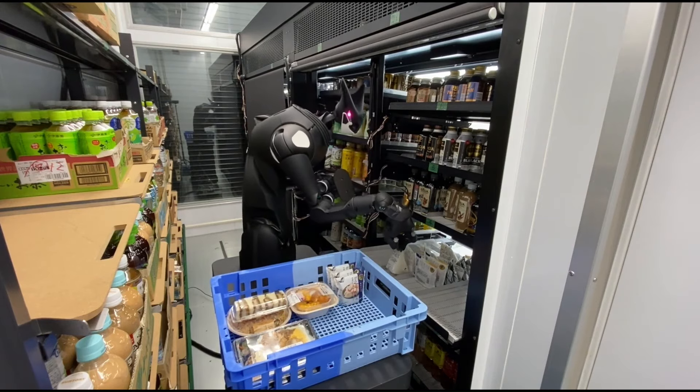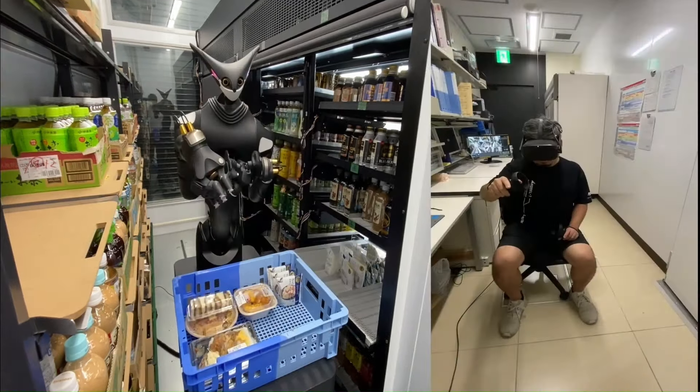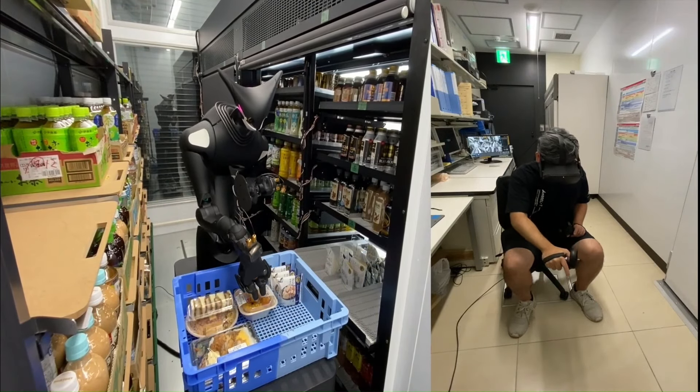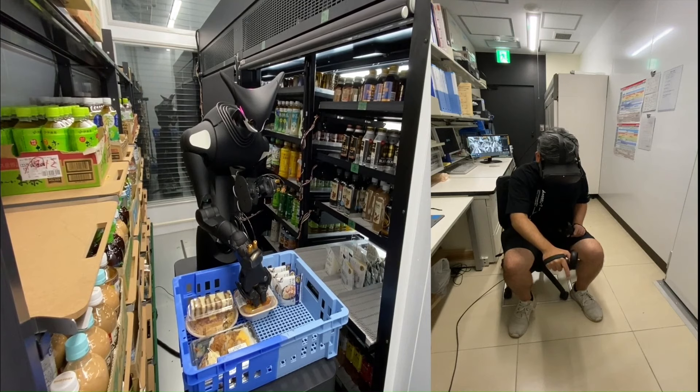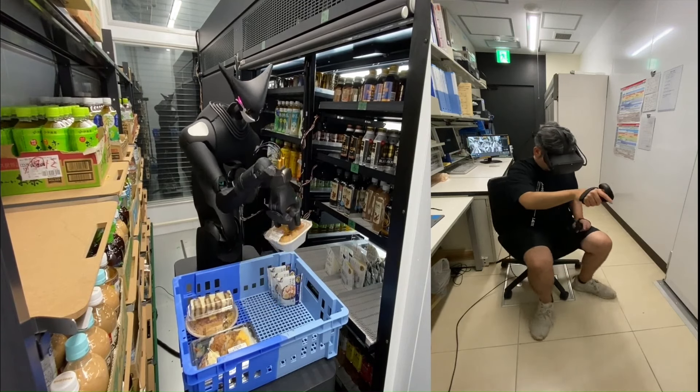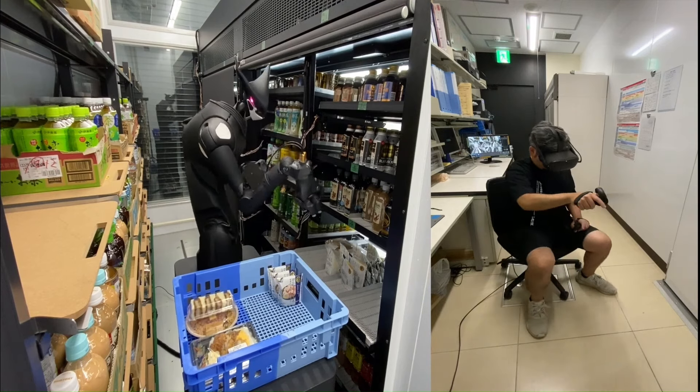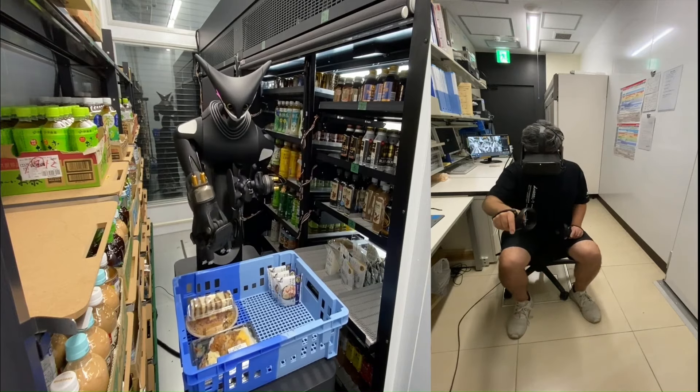The robot could also be used in other industries, such as manufacturing, logistics, and healthcare. The TeleXistence Model T is a promising new technology that could have a significant impact on the retail industry. It has the potential to make stores more efficient and productive, and it could also create new job opportunities.